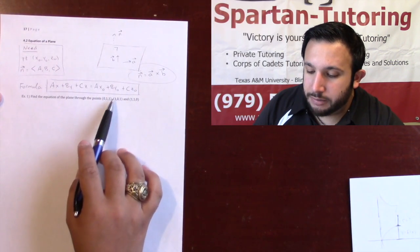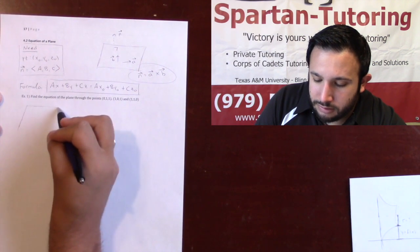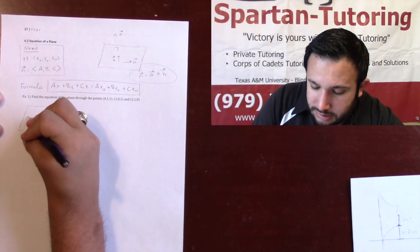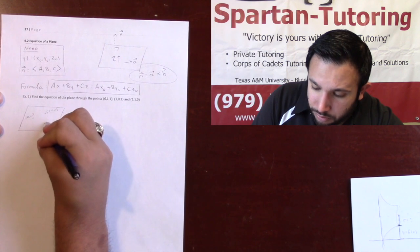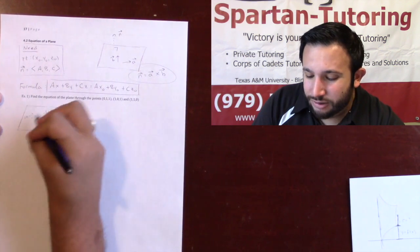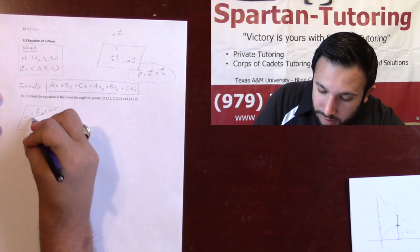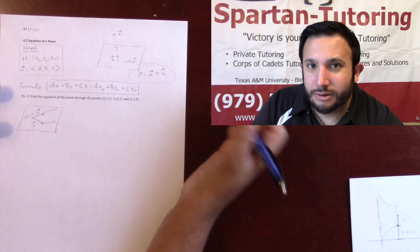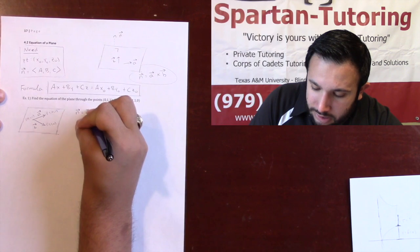Remember, strategy-wise, I've got to be able to find two vectors on the plane. I like to draw my scenario. So here's my plane. You've got three points sitting on this plane: the point (0, 1, 1), the point (1, 0, 1), and the point (1, 1, 0). What I can do, given these three points, is find the vector from one point to another — I'll call that vector a — and find another vector from one point to another — I'll call that vector b. Then I cross them to find my normal vector n, which is a crossed with b.